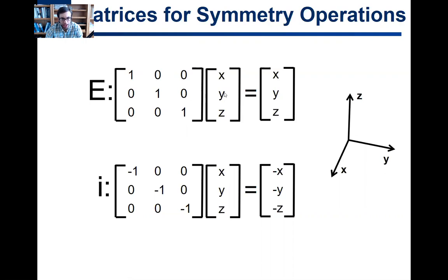0, 1, 0 dotted with x, y, z. That's 0 times x plus 1 times y plus 0 times z. That gives you y. 0, 0, 1 dotted with x, y, z. 0 times x gives you 0. 0 times y gives you 0. Plus, lastly, 1 times z gives you z.